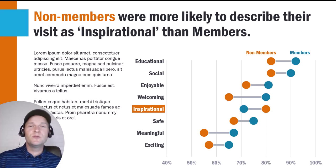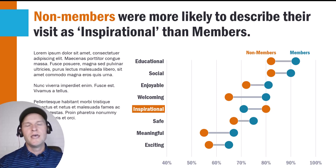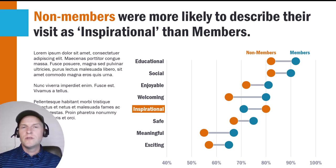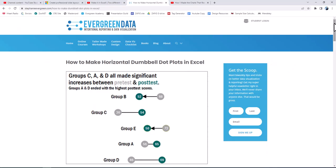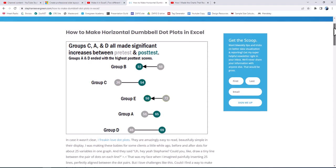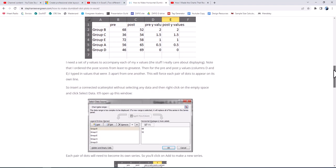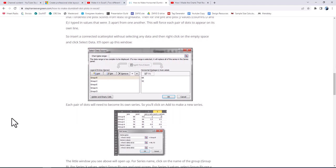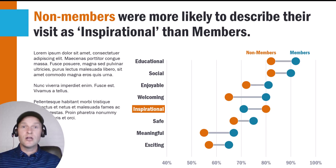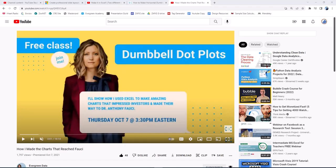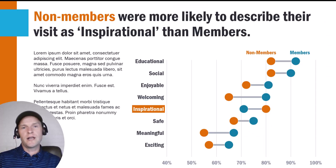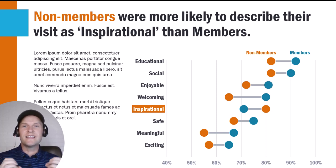Hi everyone, Nick here. Today I'm going to show you how to make beautiful connected dot plots, or dumbbell dot plots. I first learned how to make these from Stephanie Evergreen at Evergreen Data. She has so many great tips and tricks for creating charts in Excel. The original method used a scatter plot as the base, with each pair of dots as its own data series added one by one — which could get time-intensive. Later, Stephanie posted a free webinar using a stacked bar chart with error bars as a quicker method. I'll put those two links in the comments.